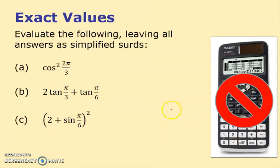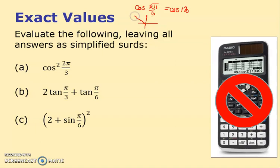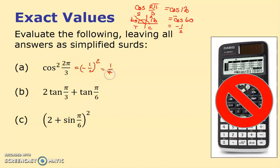Now for cos²(2π/3): 2π/3 is 120 degrees. Drawing it, the angle to the horizontal is 60. cos(60) = 1/2. Only sine is positive there, so cos(2π/3) = −1/2. Squaring that gives 1/4.